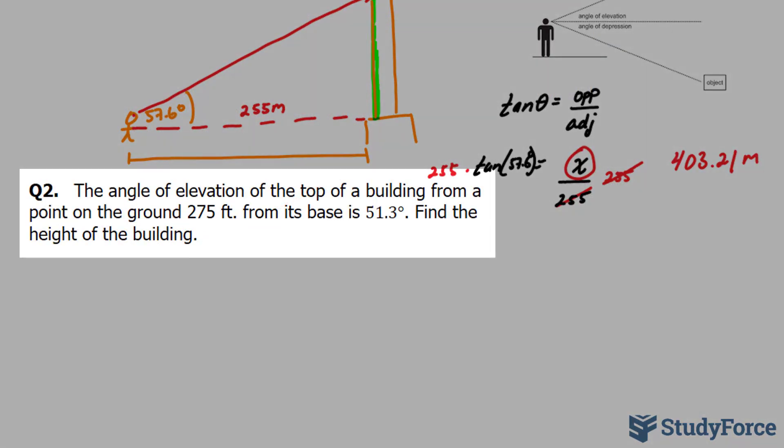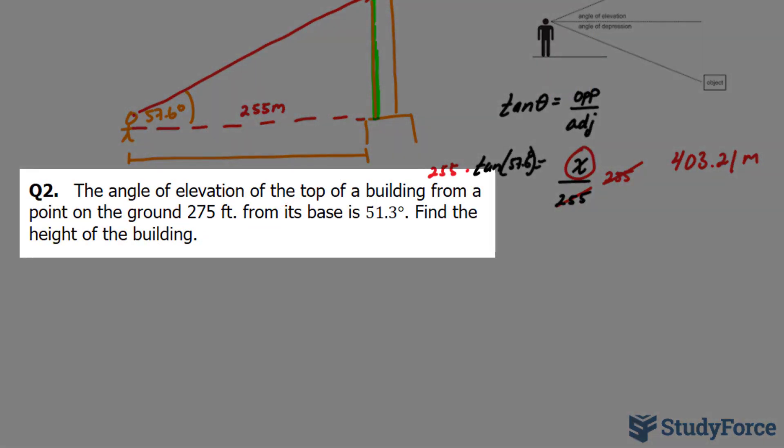In question two they ask: the angle of elevation of the top of a building from a point on the ground 275 feet from the base is 51.3 degrees. Find the height of the building.